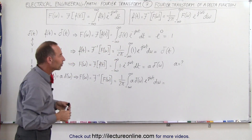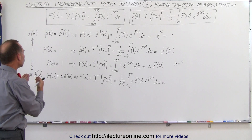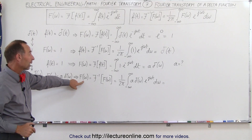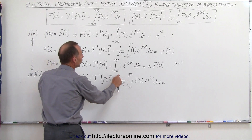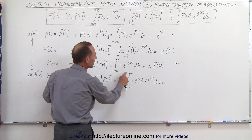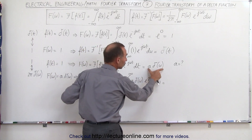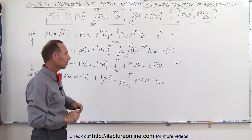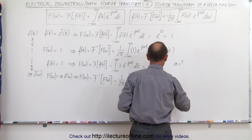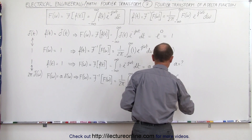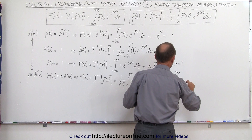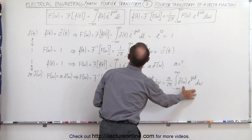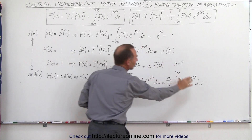To the rescue comes the inverse Fourier transform. If we assume that the function in the frequency domain is some constant a times the delta function, and we take the inverse Fourier transform, by definition that's 1 over 2π times the integral from minus infinity to infinity of the function in the frequency domain — which we assume to be a·δ(ω) — times e to the j·ω·t d·ω. Now a is a constant, so it comes outside the integral sign, giving us a over 2π times the integral of the delta function in the frequency domain times e to the j·ω·t d·ω. These integrals now look identical.